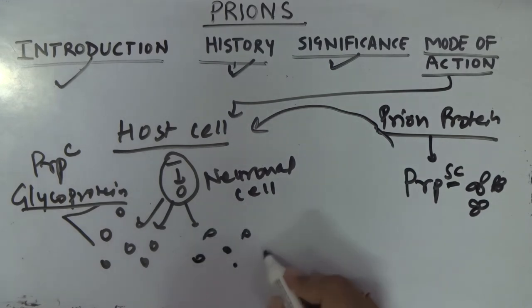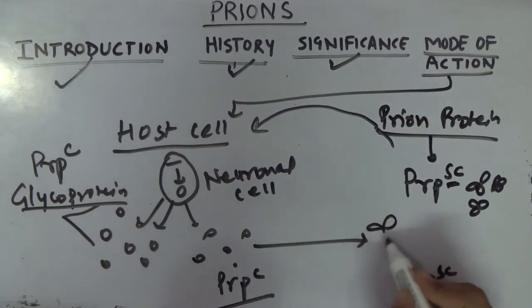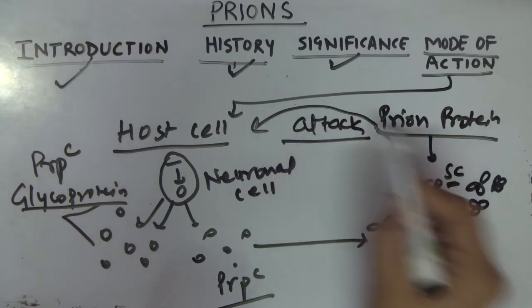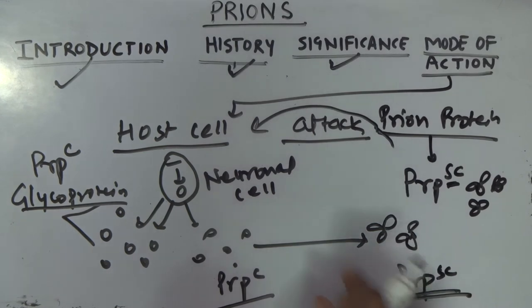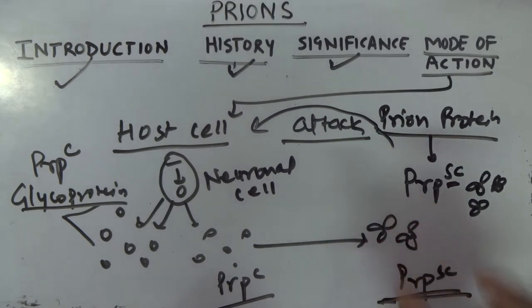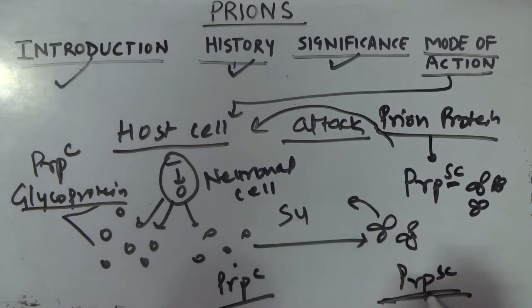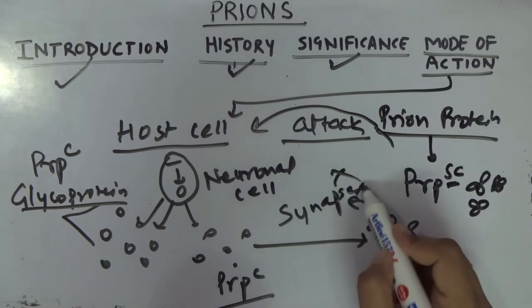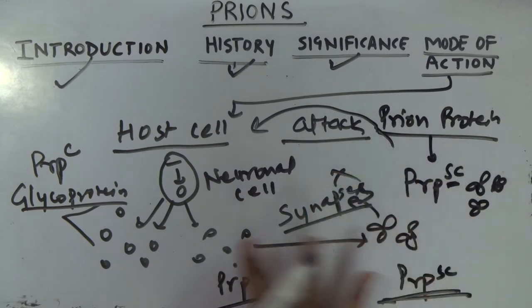When prion protein acts on the host cell, the host cell protein PrPC gets converted into PrPSc. This is the abnormal form, and the abnormal form cannot carry out proper host functions. It cannot act like normal neuronal cells. Since neurons are mainly involved in the brain through synapses — neuronal cells communicate with each other at junctions called synapses — when PrPC is converted to PrPSc, synaptic function in the brain is disrupted, leading to brain damage and neurological disorders that can cause the death of the host.